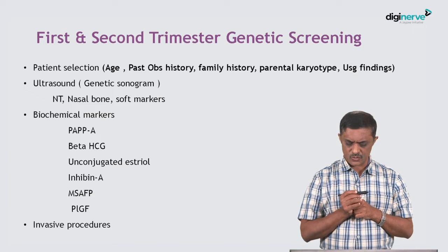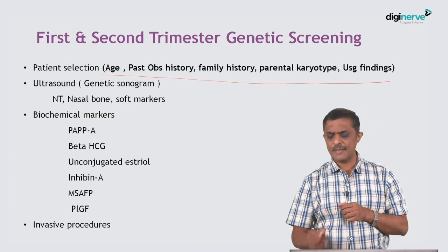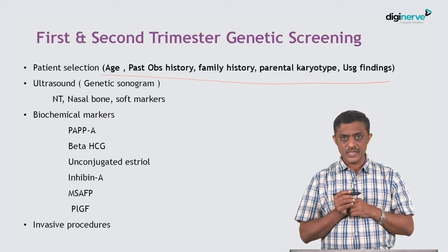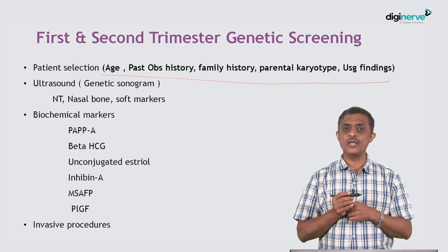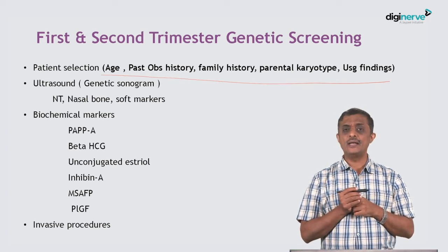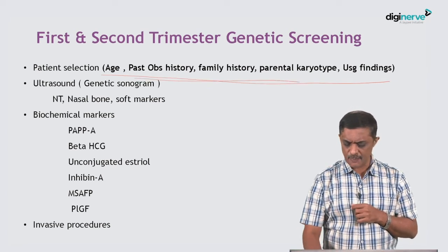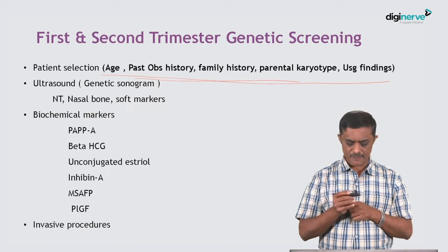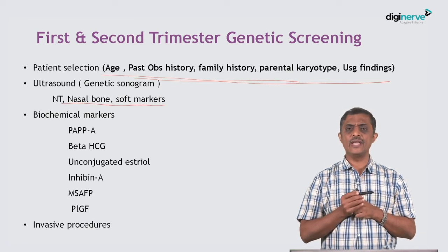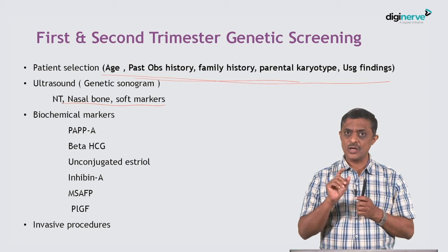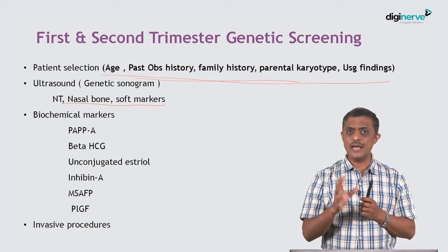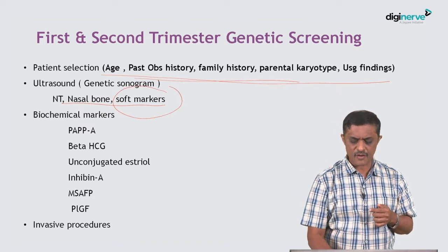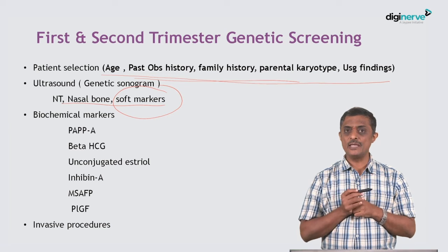Other methods of genetic screening include looking at the demography of the patient — if the patient is 35 plus, that is high risk. Past obstetric history, family history of mental retardation, parental karyotype especially balanced translocations, and ultrasound findings all help compute the risk of genetic abnormalities in the baby. Ultrasound soft markers such as NT scan findings and nasal bone assessment are used — one abnormality alone may not suggest aneuploidy, but multiple soft markers together can indicate a possibility of aneuploidy.